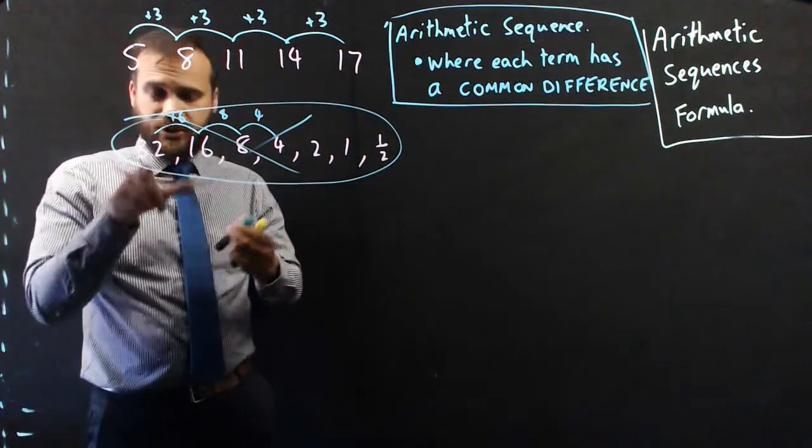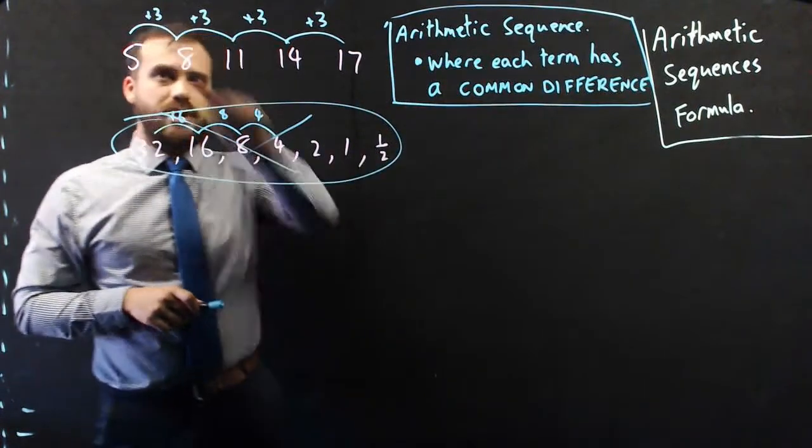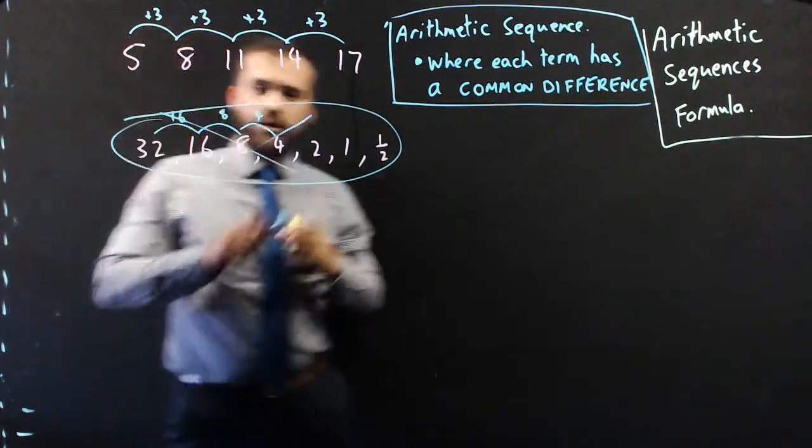It's a sequence because you can see I'm just halving it every time. But it's not an arithmetic sequence. Arithmetic sequences have a common difference.